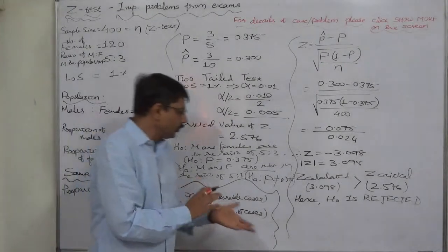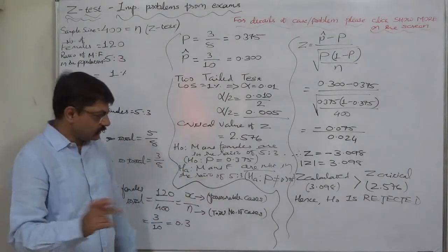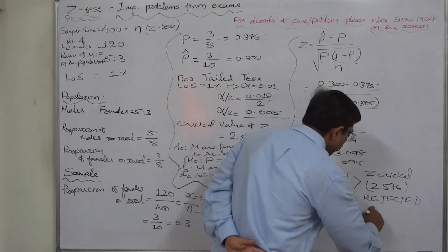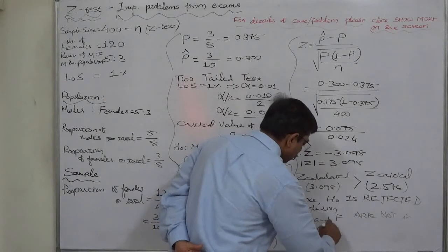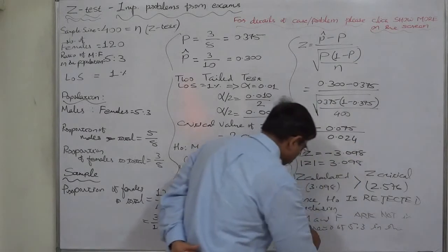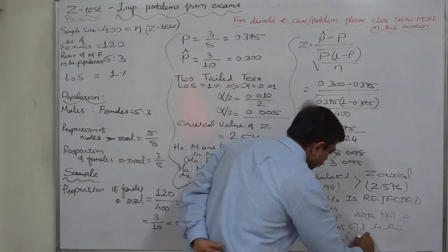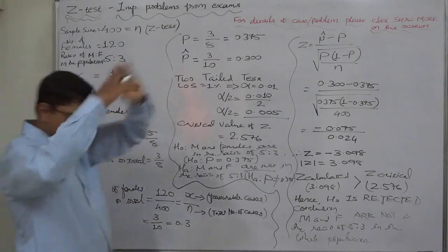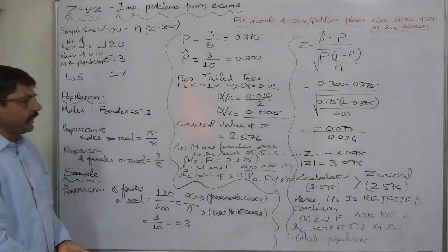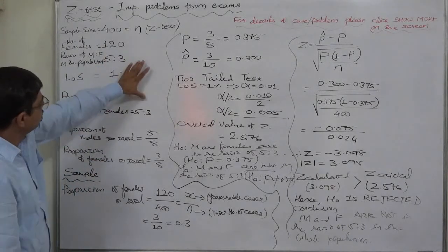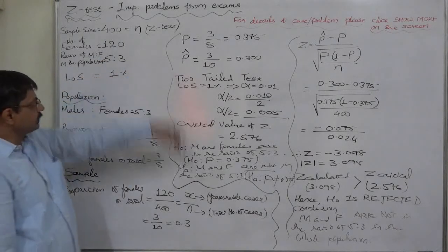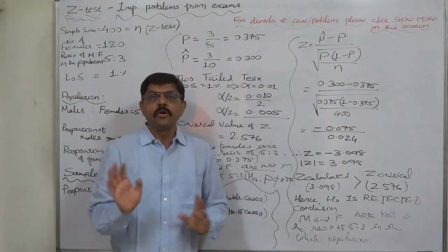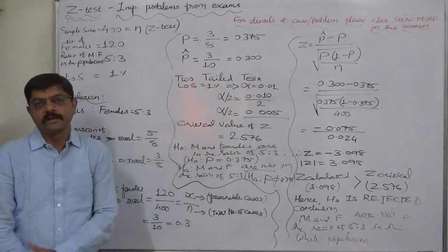We have no clear idea whether the ratio is less than or greater than 5:3, so the conclusion is: males and females are not in the ratio of 5:3 in the whole population. What the actual ratio is — that is another task requiring further analysis. Through this hypothesis testing we concluded that, on the basis of this sample, the males and females are not in the ratio of 5:3 in the population from which this sample has been drawn. Thank you very much.